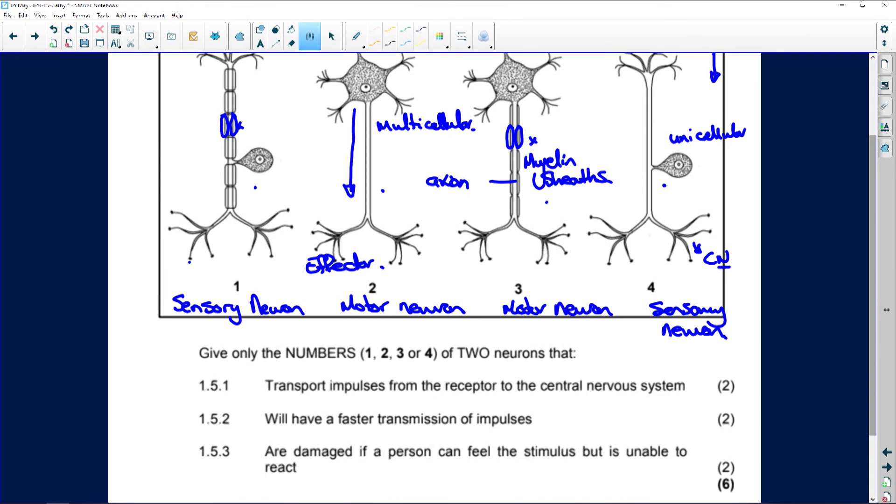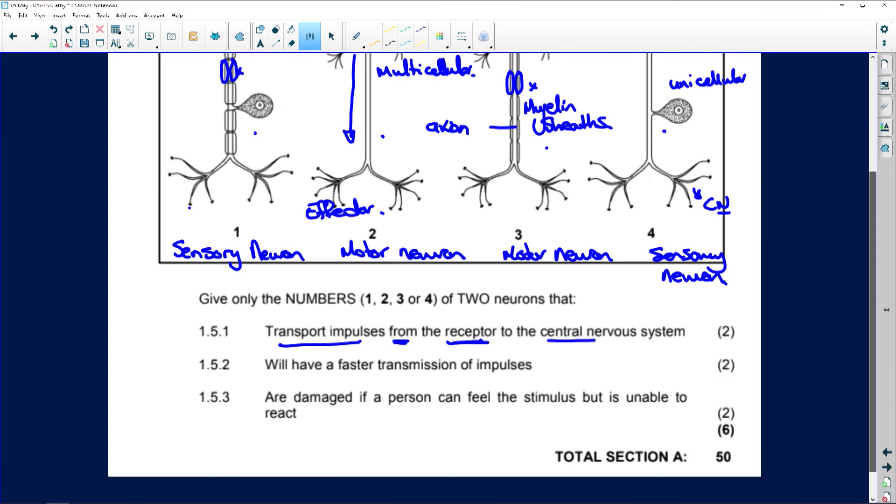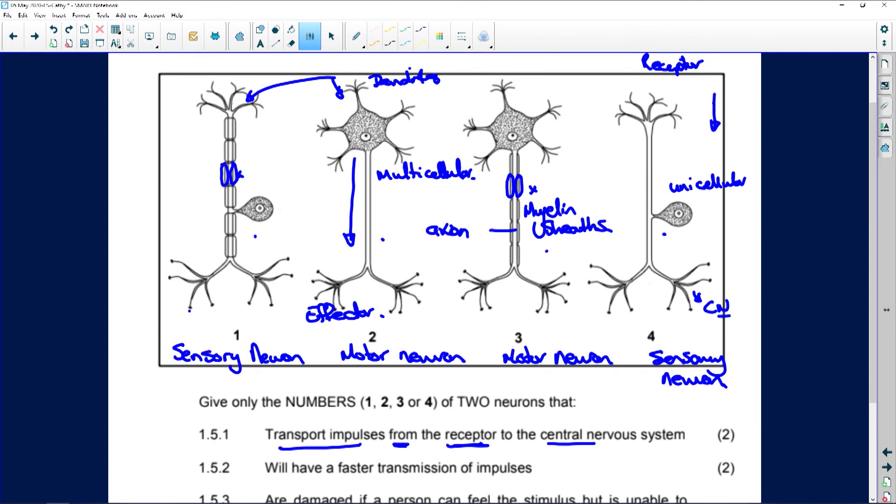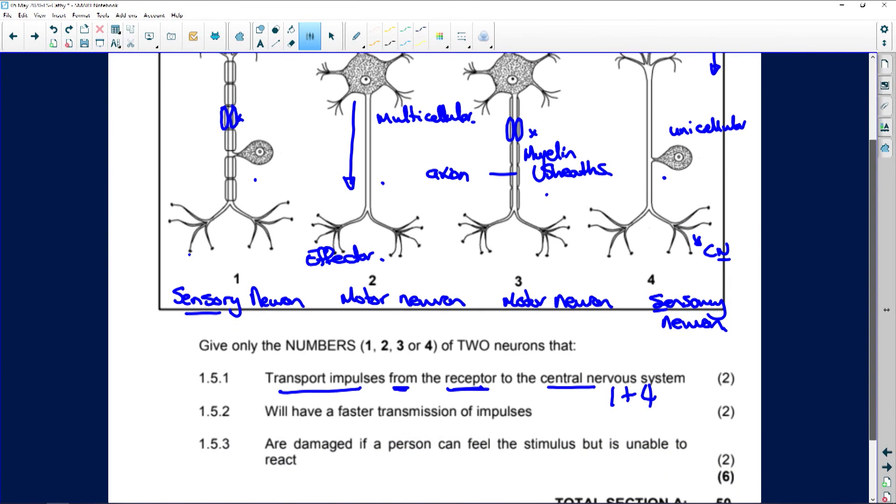So, let's see. They want to know the numbers one, two, three, or four of the two neurons that transport impulses from a receptor to the central nervous system. It is always going to be your sensory neurons. So, it will be one and four. Easy peasy, two marks.